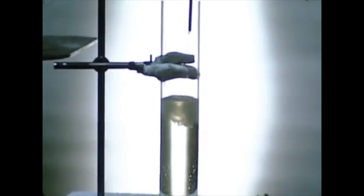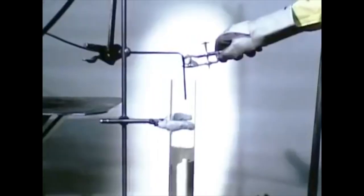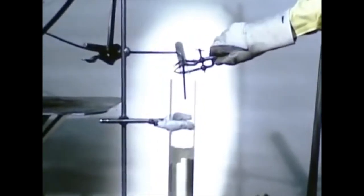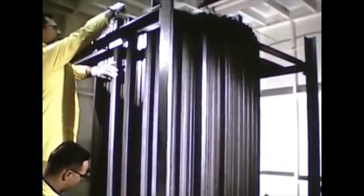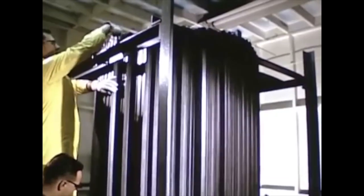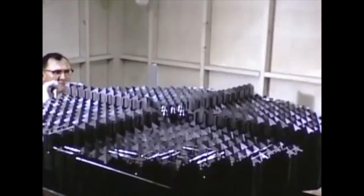Instead of being formed into solid pins, the fuel in a molten salt reactor is dissolved in a mixture of molten fluoride salts, which doubles as the coolant. The core features a system of graphite moderator blocks designed such that the molten salt can only achieve criticality when contained within the core vessel.